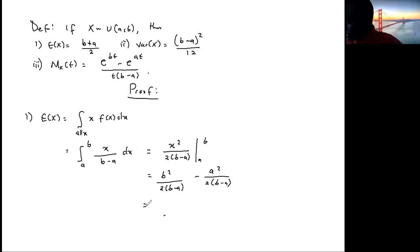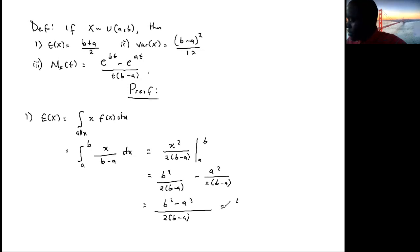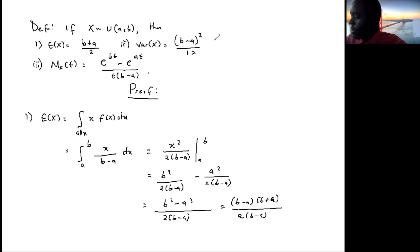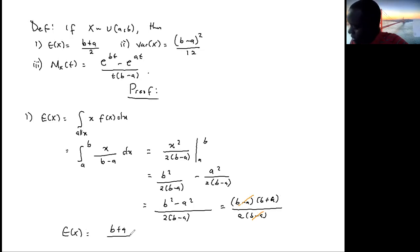The denominator is common, so on top we have b squared minus a squared. The numerator is a difference of two squares, so we factorize to get (b minus a)(b plus a) over 2(b minus a). The (b minus a) terms cancel, so the expectation equals (b plus a) over 2, as required.